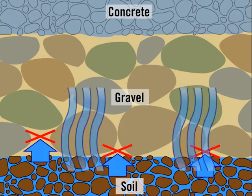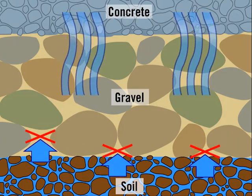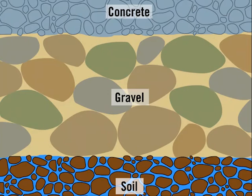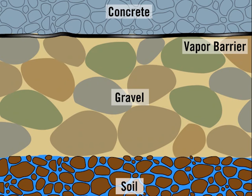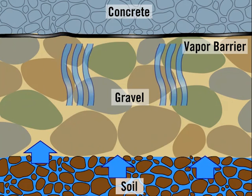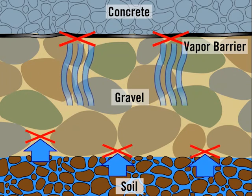However, this method only prevents against liquid water, not water vapor. To prevent this, another standard practice is to use a thin plastic sheet called a vapor barrier to protect against water vapor. The combination of these two techniques proves the most effective at preventing any form of moisture from affecting the concrete, keeping it nice and dry.